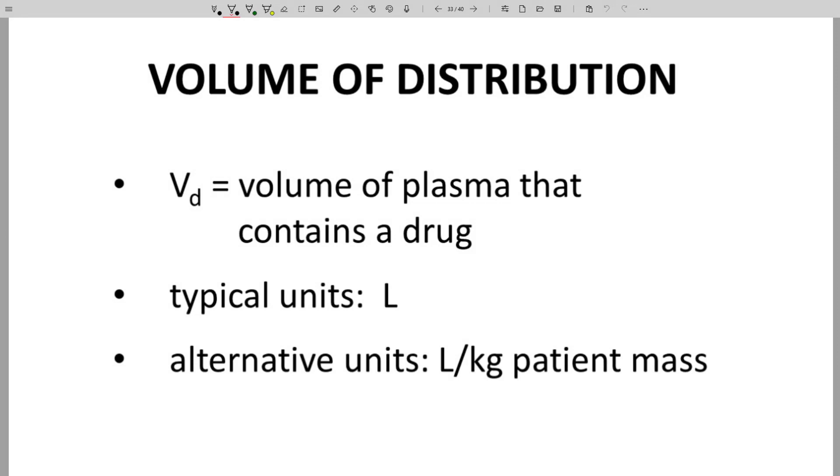Along with clearance, volume of distribution is a key pharmacokinetic property that determines half-life. Volume of distribution defines a volume of plasma and its equivalents that contain a drug in the body.